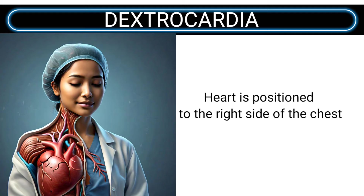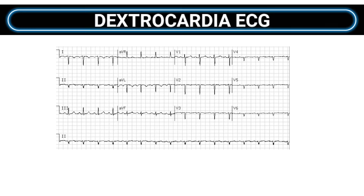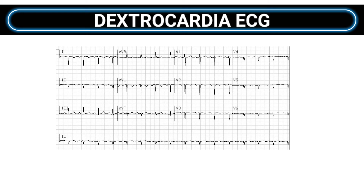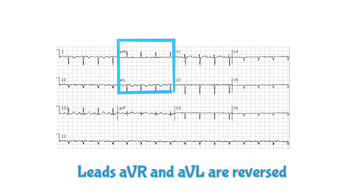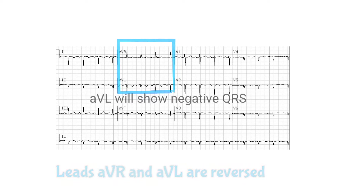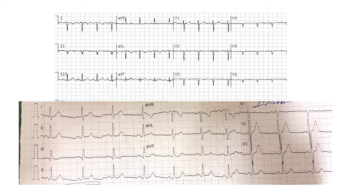Dextrocardia is a condition where the heart is positioned on the right side of the chest. On an ECG, this presents some unique characteristics. Primarily, you'll notice that the QRS complex in lead one is negative — this is because the main vector of depolarization is directed rightward instead of leftward. Also, leads AVR and AVL will appear reversed: AVR will show a predominantly positive deflection while AVL will be mostly negative.